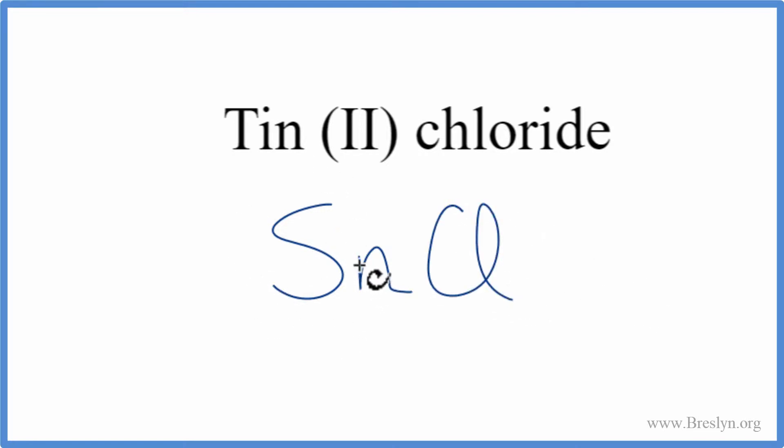So we have a metal, that's tin, and then a nonmetal. So we have an ionic compound, and we need to think about the charges for each of these elements. Tin's not too bad because the name gives us the charge, Tin (II). That Roman numeral two means we have a two plus charge. Chlorine on the periodic table has a one minus charge.